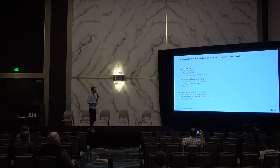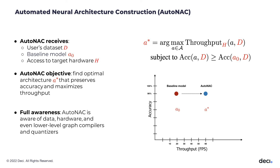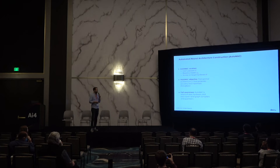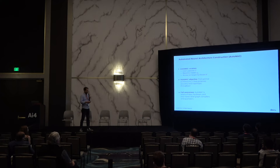Let's dive a little deeper on how the algorithm works. We have a given dataset, a given baseline model such as ResNet-50, and access to a target hardware edge with all its inference environment. The automatic objective is to generate an architecture we call A-star, optimized for certain criteria and being aware of all the data, hardware, and model characteristics of the production environment.